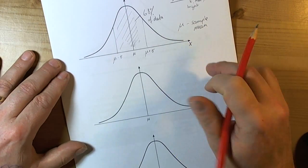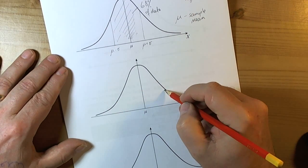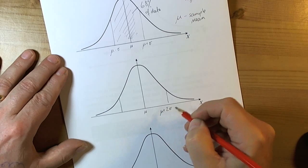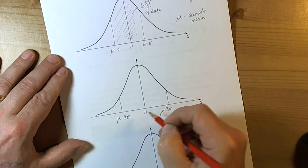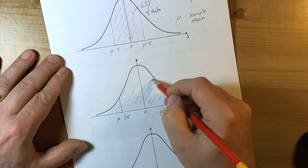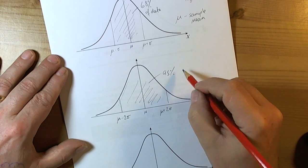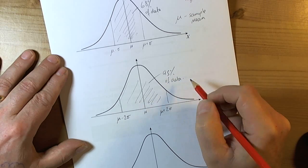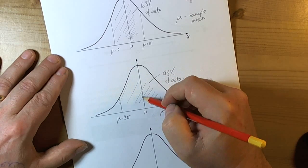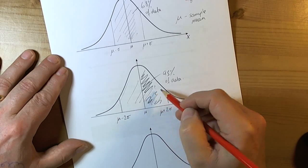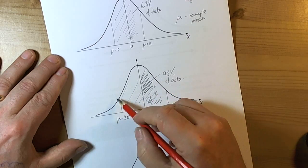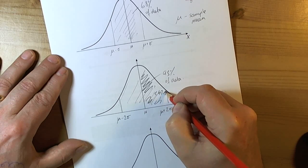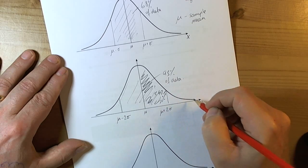There are other properties of the normal distribution we need to be familiar with. If we go two standard deviations either side of the mean — two standard deviations above and two standard deviations below the sample mean — we find that 95% of the data is within there. Because of the symmetry property, if we look at just one half, it must be half of 95%, so that particular section contains 47.5% of the data.